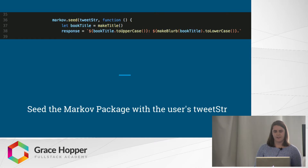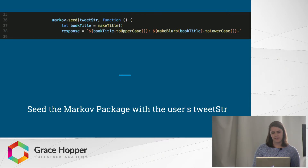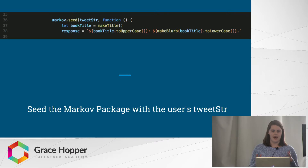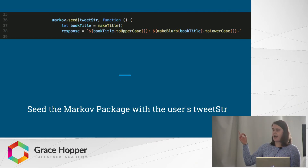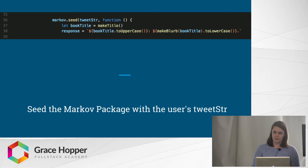Now that we have a string of that user's most recent tweets, we can seed the Markov package and start using the Markov chaining functionality. I built some helper functions to deal with that Markov chaining. Ultimately, make_title is going to return a two-word title, and make_blurb is going to return a dozen-ish word blurb.